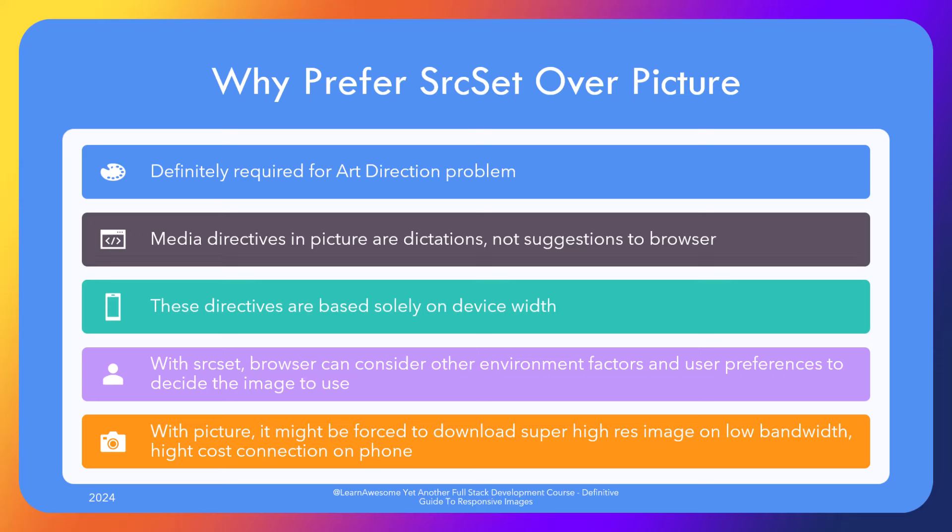Browser knows a lot more than you do. On the other hand, the media attribute in picture element is an explicit instruction to the browser purely based on device size. On a high density screen, the browser would have no choice but to go for the super high-res, high-sized variant. If your visitor is on a slow public Wi-Fi, they might drop the idea of browsing waiting for such images to download. There are other preferences the browser can consider — like whether on Wi-Fi or data, or if the user has data save preferences — all preferences that would be overridden with picture element. Stick to source set for everything except art direction; use picture with media attributes only when necessary.